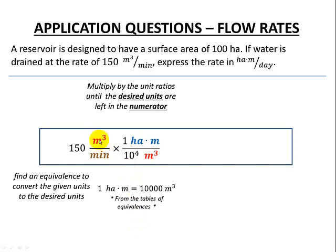I want to get rid of meters cubed first, so there's my hectare meters per meter cubed. Now for the minutes, let's deal with the time. I know that there's 60 minutes in one hour, but I do want to go to days so I'm going to go from 24 hours to one day. These last two unit ratios, that's just general knowledge. We should all know there's 24 hours in a day and there's 60 minutes in an hour.